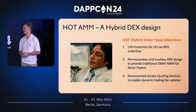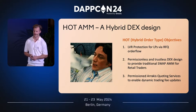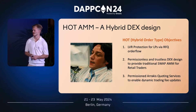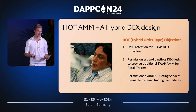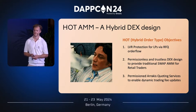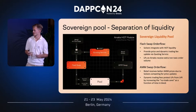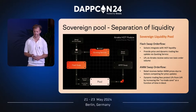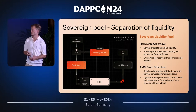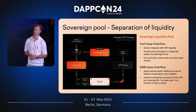HOT AMM has three main objectives. First is LVR protection — protecting liquidity providers via an RFQ order flow. Second, we want to preserve a permissionless trustless DEX design and provide the traditional swap AMM for retail traders so that everyone can trade. Third, we have a permissioned Arrakis quoting service that enables dynamic fee updates. On the solver side, we have flash swaps where solvers compete for quotes, bringing in price updates and updates to our dynamic fee schedule.